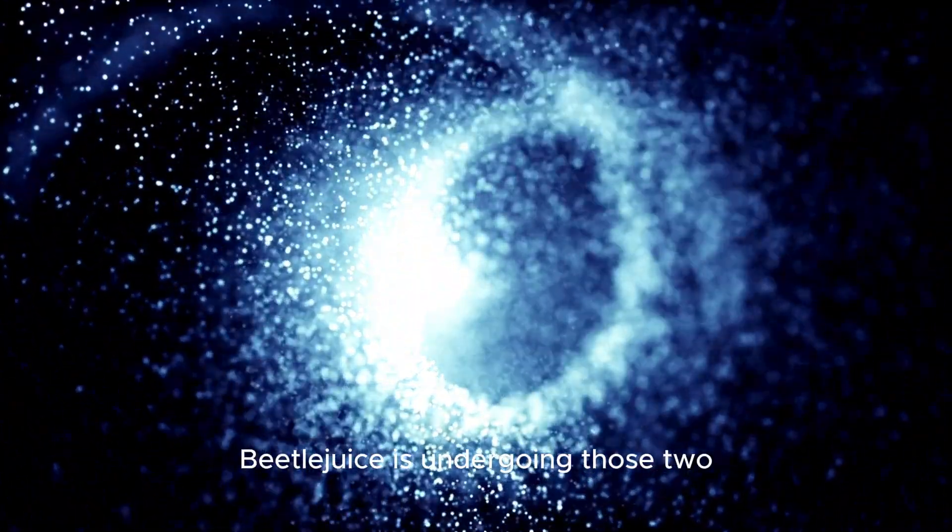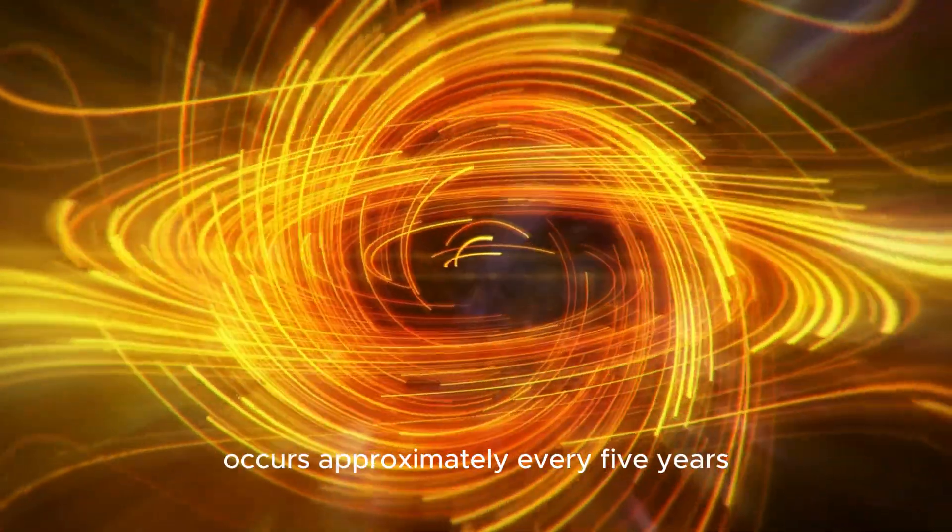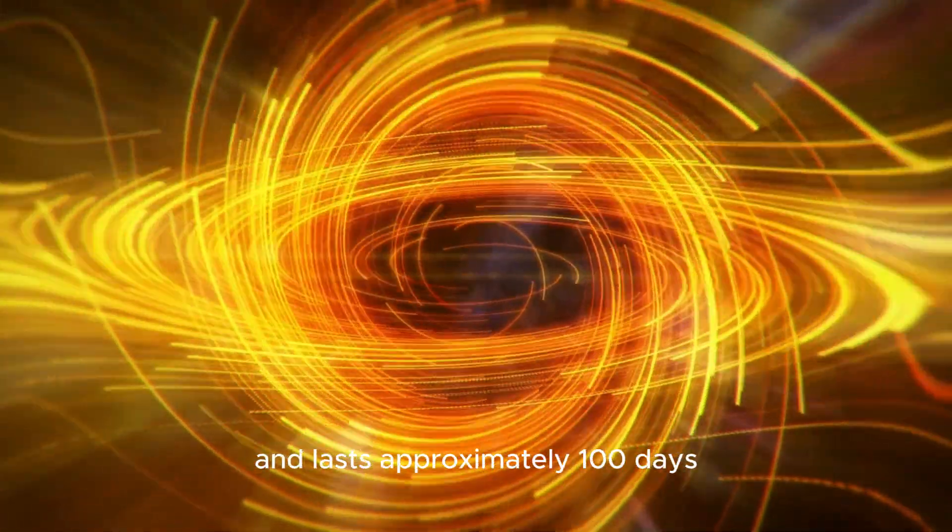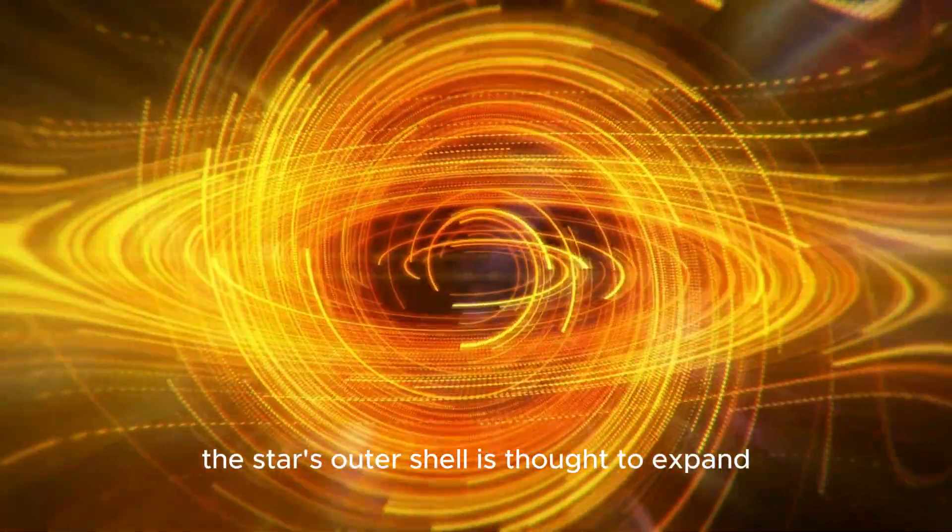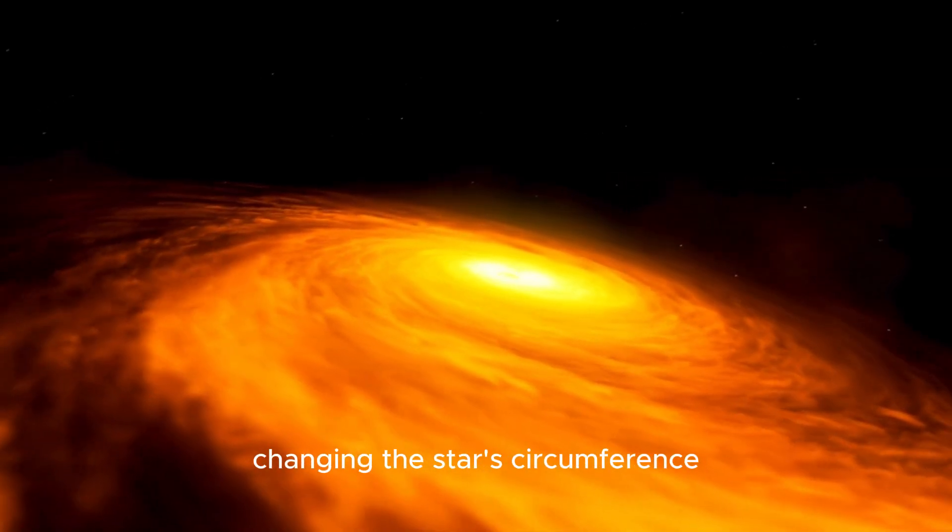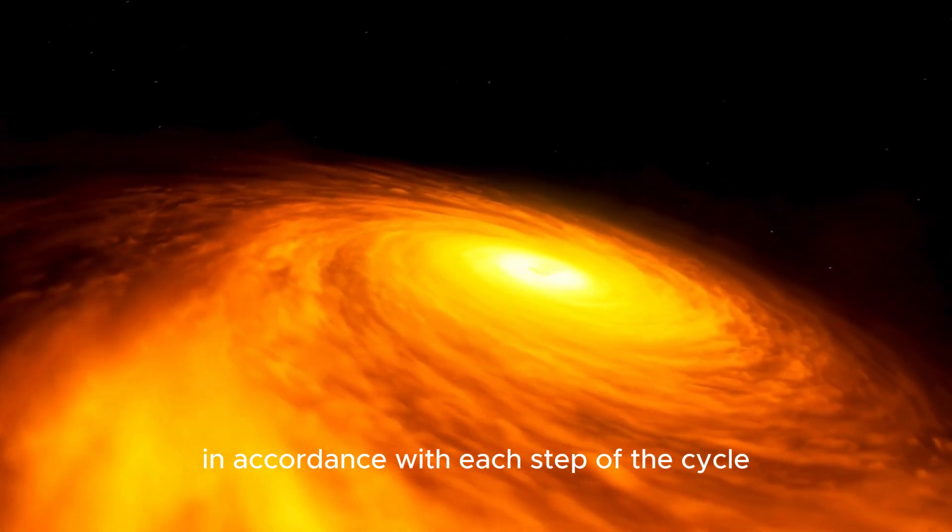Betelgeuse is undergoing two dimming and brightening cycles. The second of which occurs approximately every five years and lasts approximately 100 days. The star's outer shell is thought to expand and contract during this cycle, changing the star's circumference and average temperature in accordance with each step of the cycle.